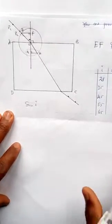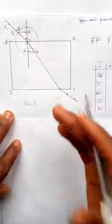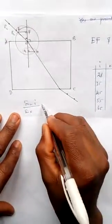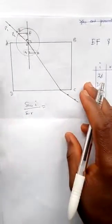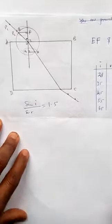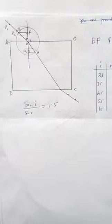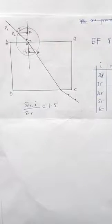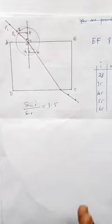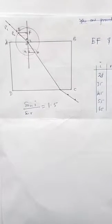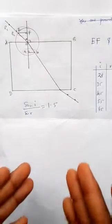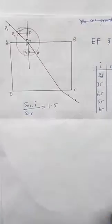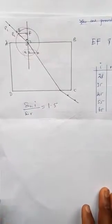What it simply means is that sine i over sine r is a constant. Now that constant has been verified to be 1.5 on the dot. So whatever practical you are doing on this, they are expecting that at the end of the day your graph is going to have a slope of at least 1.5 within the range 1.45 to maybe 1.6, 1.7. But if you can have 1.5 on the dot, that is very very accurate, as in perfect. And I'm going to teach you how you can do that here.